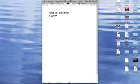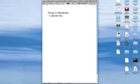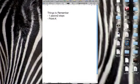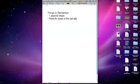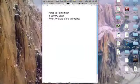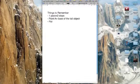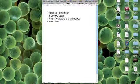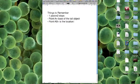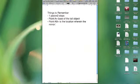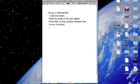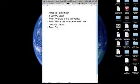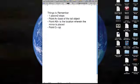That one pace equals two steps. That point A is the base of the tall object that we are trying to measure. Point AB is the location where the mirror is placed. And point C is the spot where Lance can see the top of the tall object in the mirror.